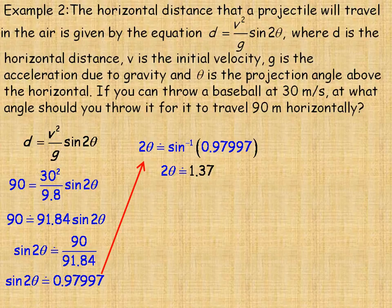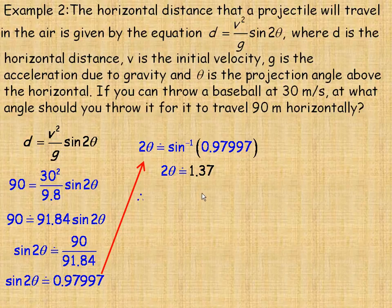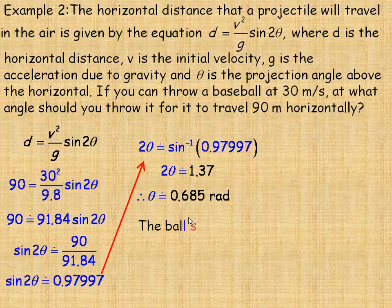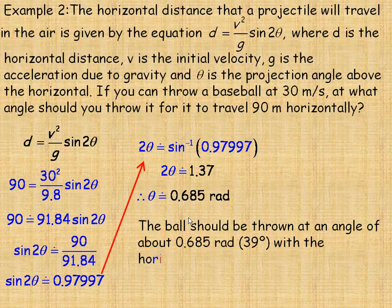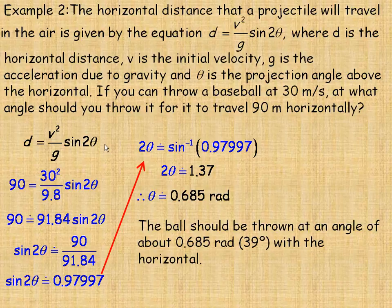Now I'll talk about degrees in a moment. So 2 theta equals 1.37 radians. So dividing both sides by 2, we get theta is about 0.685 radians. So that means that the ball should be thrown at an angle with the horizontal of about 0.685 radians.